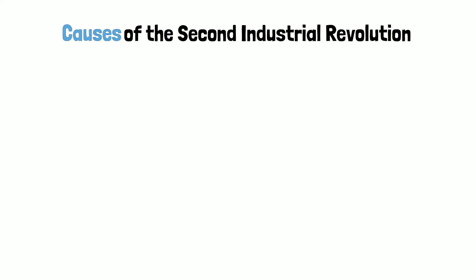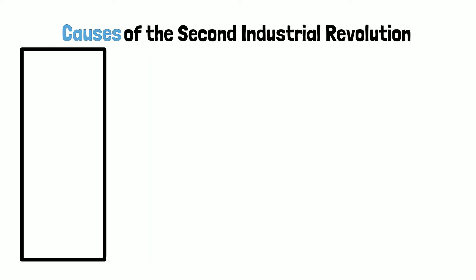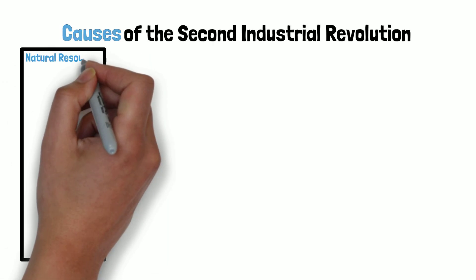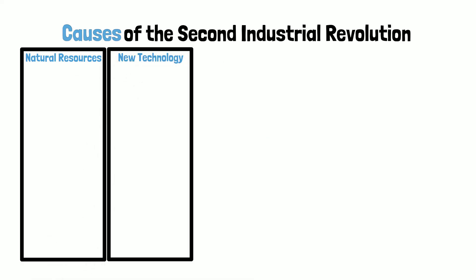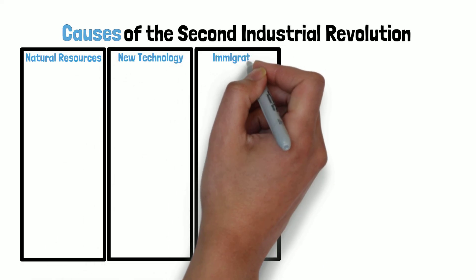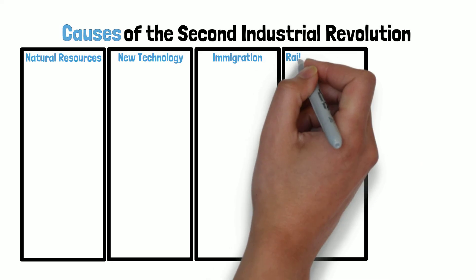The Second Industrial Revolution began shortly after the Civil War and lasted from the late 1800s to the early 1900s. In many ways, the Second Industrial Revolution was an expansion of the First, as new technologies for transportation, engineering, and communication linked the country together like never before. There were five principal causes: the availability of natural resources, immigration, new technology, the expansion of railroads, and new business practices.